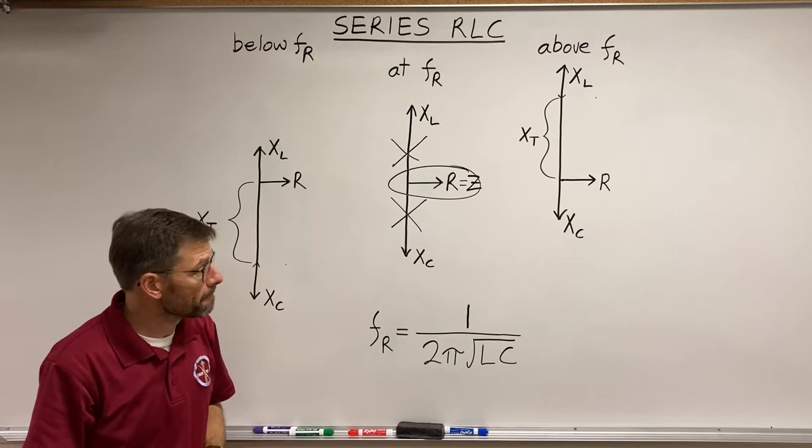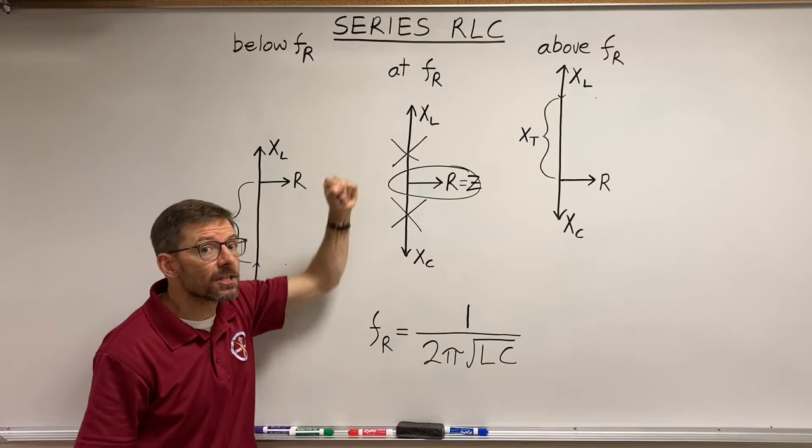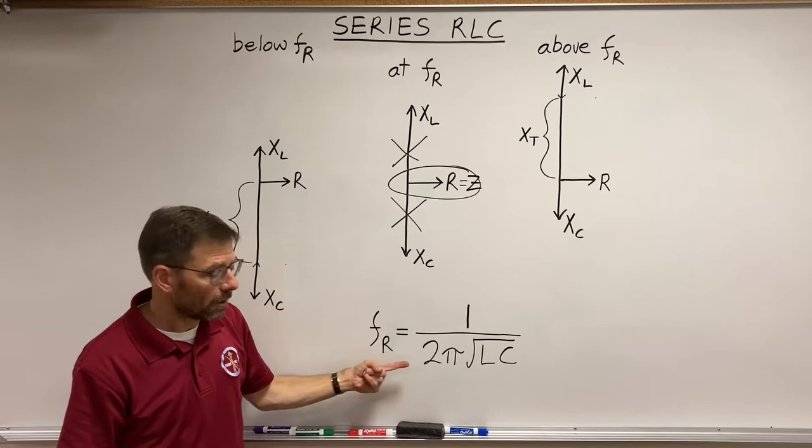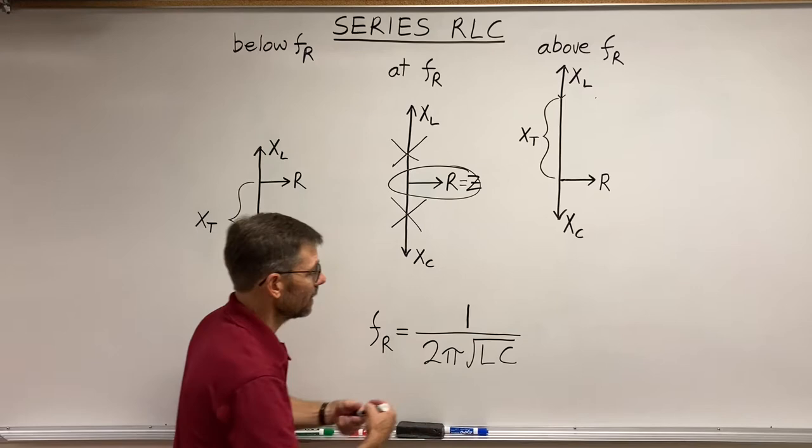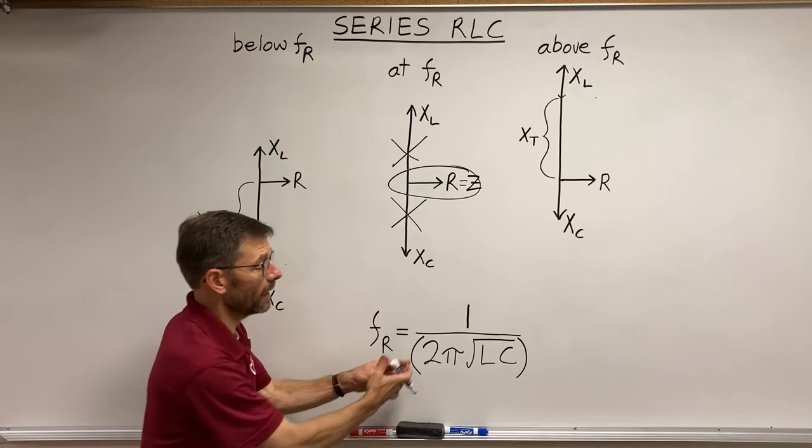How do we find the frequency at which that is the case for any given capacitor or inductor? Right here. The resonant frequency equals one over, and this is the quantity, so I really should put parentheses around that. We've got one divided by two pi, the square root of LC.